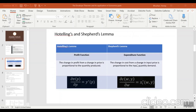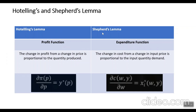Now we have seen what the Envelope Theorem is. We will now see the special cases of the Envelope Theorem which we use for different applications in economic theory — either in the expenditure function or in maximizing or minimizing the profit function. We have Hotelling's Lemma and Shephard's Lemma. Hotelling's Lemma is associated with your profit function, while Shephard's Lemma is associated with the expenditure function. Hotelling's Lemma defines what happens to profit when you change the price — when you change the price, your change in profit is proportional to your quantity. Similarly, Shephard's Lemma: the change in cost when you change the input price is proportional to your input quantity.